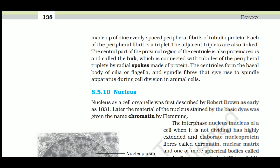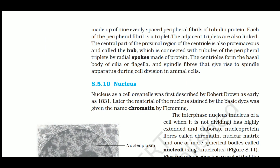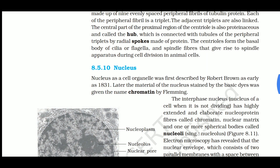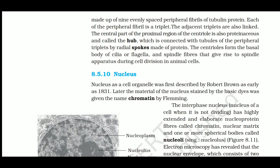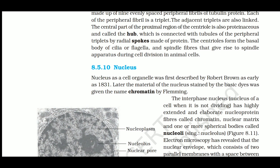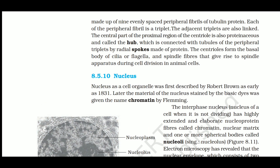Each centriole is made up of nine evenly spaced peripheral tubulin proteins, and each peripheral tubulin is a triplet - so the arrangement is nine triplets. Adjacent triplets are also linked. The central part of the proximal region of the centriole is proteinaceous and called the hub, connected to peripheral triplets by radial spokes made of protein. Centrioles form the basal body of cilia and flagella, and also form spindle fibers during cell division in animal cells. The arrangement for centrioles is '9+0.'